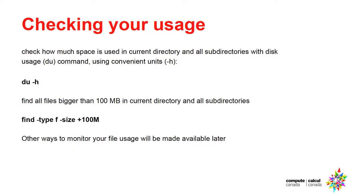To check how much space you are using, you should use standard Unix commands such as du. The du -h command will display your disk usage in convenient units. You can also use the find command. For example, you can use find to locate all your files greater than 100 megabytes in your current directory and all its subdirectories. Other ways to monitor your file usage will be made available later.